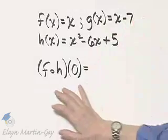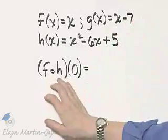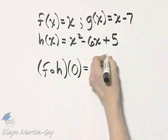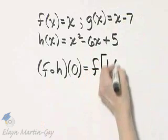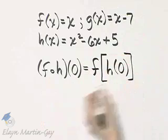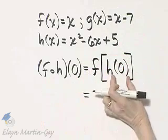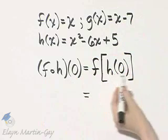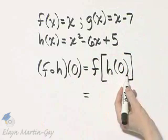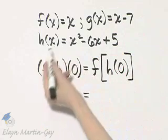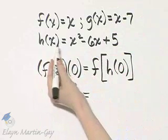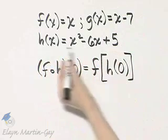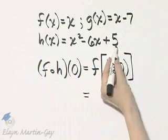Given these functions, we want to find f of h of 0. By definition, that is f of h of 0, and we work from inside outward. So we replace h of 0 with its value. h of 0 is 0 squared minus 6 times 0 plus 5, so h of 0 is 5.